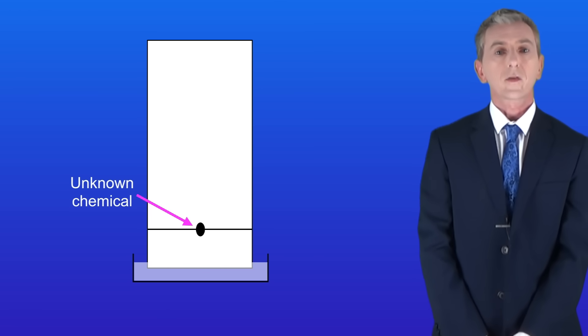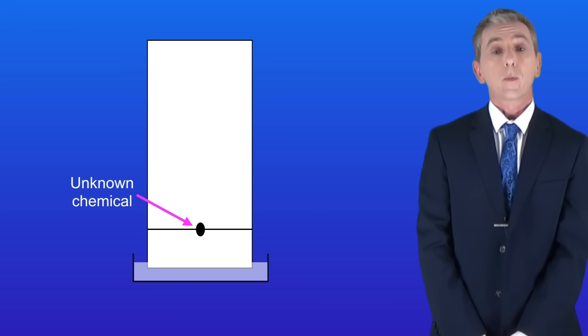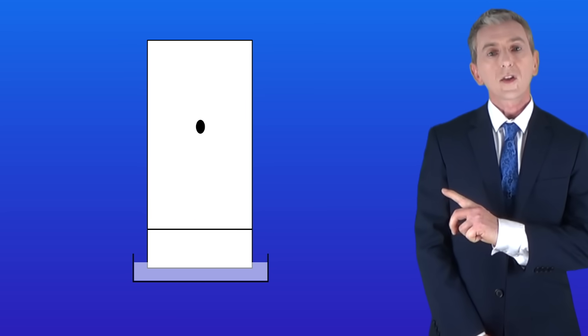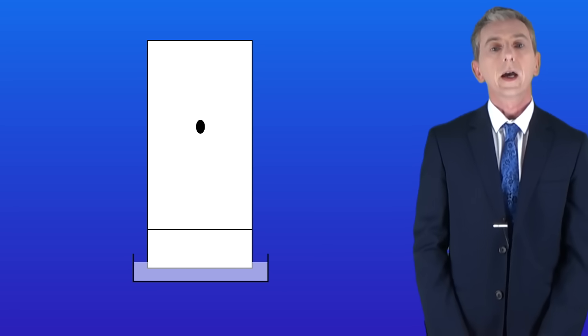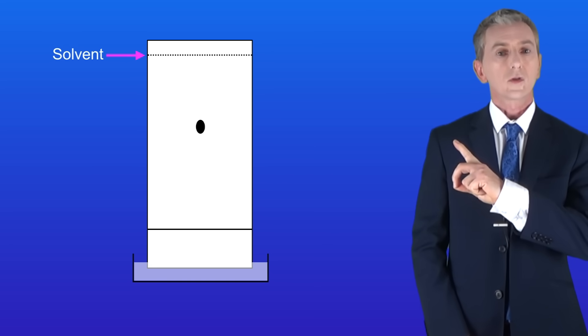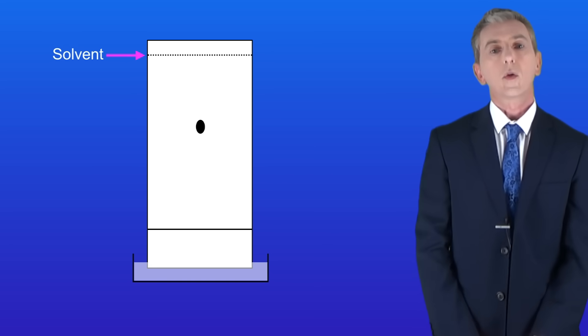So just like before we place a dot of our chemical onto the pencil line and we place the bottom of the paper into a solvent. So here's where the chemical moves to and again we can see that the chemical is pure as we only have one spot.